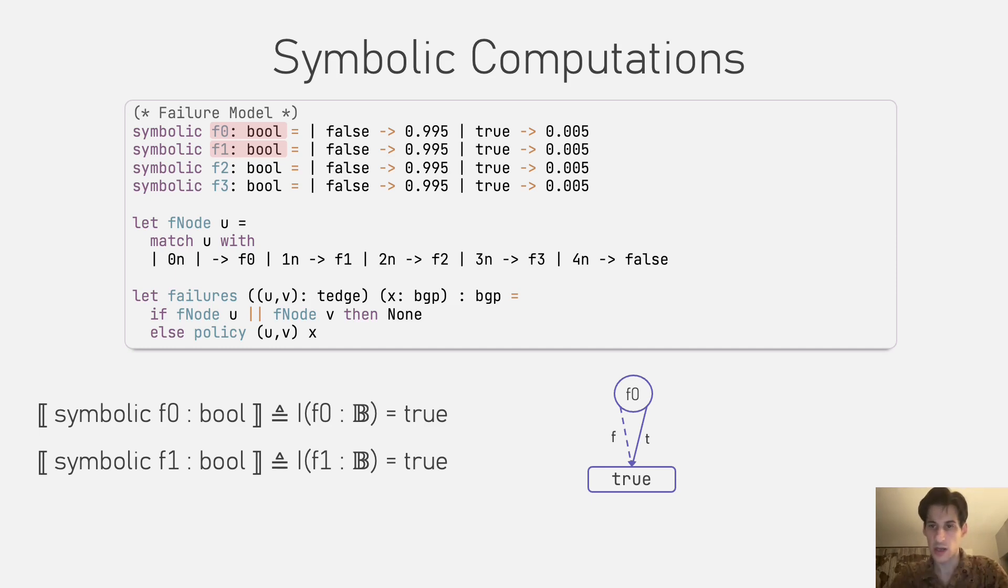The same applies to the solid arrow, which represents the true value of F0. One of the advantages of binary decision diagrams is that they do not explicitly represent redundant decisions.